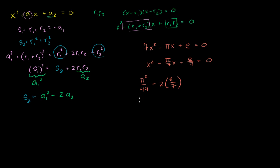Now let's see if we can extend this to the third degree — and it actually turns out you can extend this to the nth degree. Let's verify it works for a third degree polynomial: x cubed plus a1x squared plus a2x plus a3 equals 0.